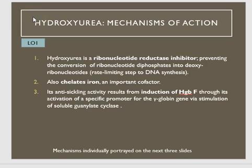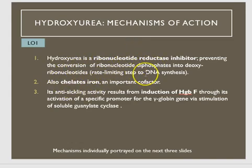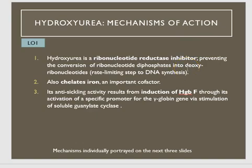Hydroxyurea actually has three mechanisms of action. The first is that it's a ribonucleotide reductase inhibitor, which affects the rate-limiting step of DNA synthesis. It also chelates iron, which is an important cofactor for many biological functions. And it has specific anti-sickling activity through the induction of fetal hemoglobin, or hemoglobin F, via activation of a specific gene promoter.